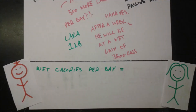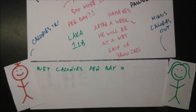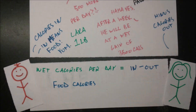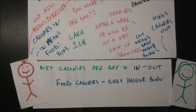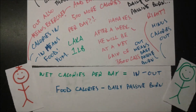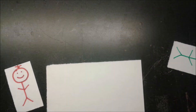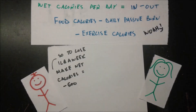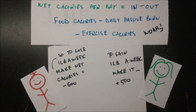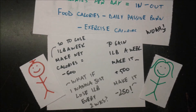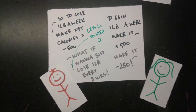The formula for net calories per day is: calories in minus calories out. 'In' is the food you take in; 'out' is your daily passive burn plus whatever exercise you do. So: net = food calories minus daily passive burn minus exercise calories. To lose a pound a week, net must be negative 500. To gain a pound, net must be positive 500. To lose a pound every two weeks, net just needs to be negative 250.